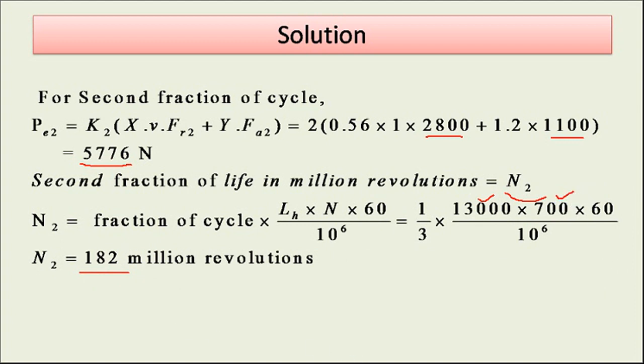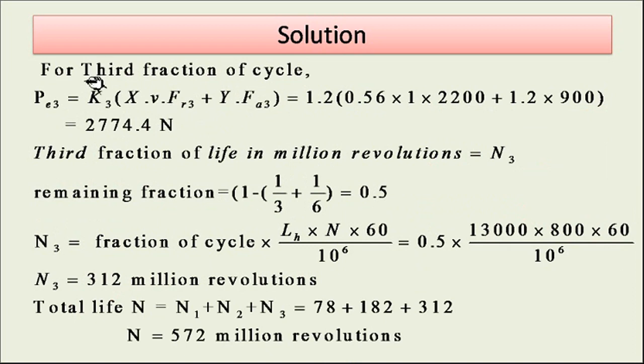Once it is over, we can go for the third fraction of cycle. In the third fraction, I will use the same equation for calculating the equivalent radial load. Here my radial force is different and axial force is different, so I will be getting 2774.4 newton.